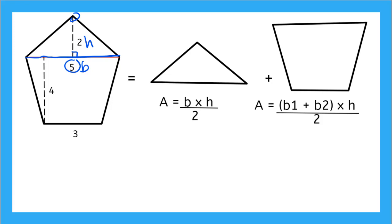So I can find the area for my triangle is going to be 5 times 2 divided by 2, which is going to give me 10 over 2, which is going to give me 5. So that's the area for my triangle.